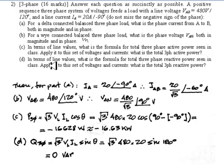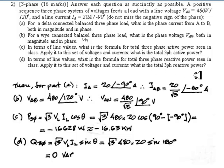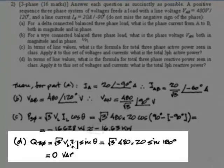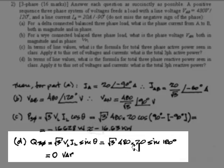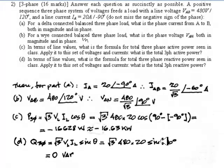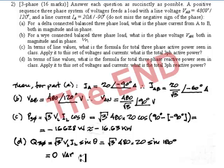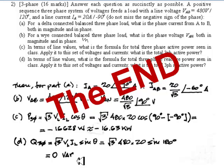Finally, in terms of line values, what is the formula for total three-phase reactive power? Q_3φ = root 3 × V_line × I_line × sine(θ), where θ is the same angle as in Part C. Applying the values: root 3 × 480 × 20 × sine(180°). Since sine(180°) = 0, the total three-phase reactive power is 0 vars. And that's the solution of question number 2 in this exam.